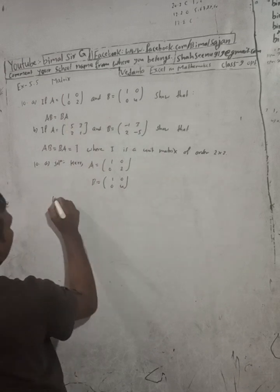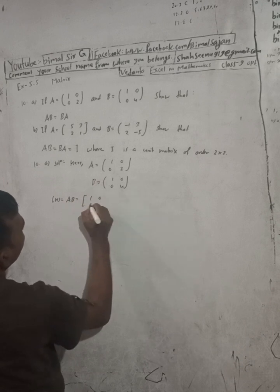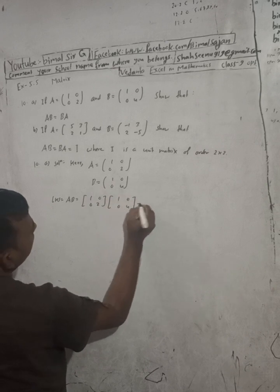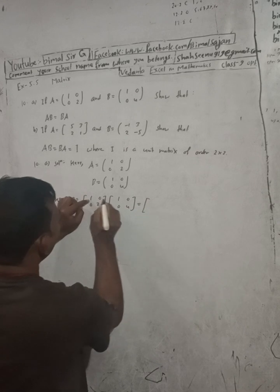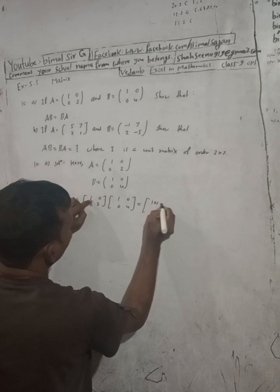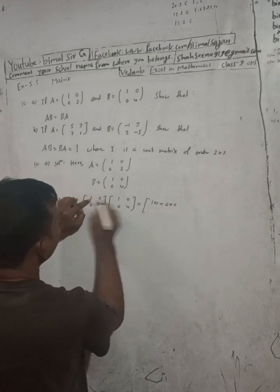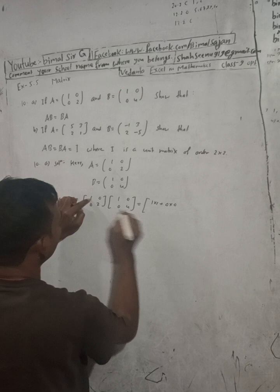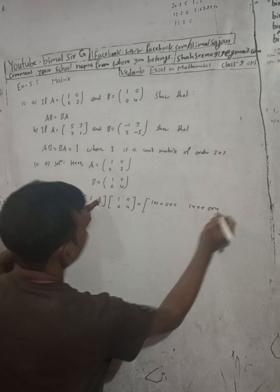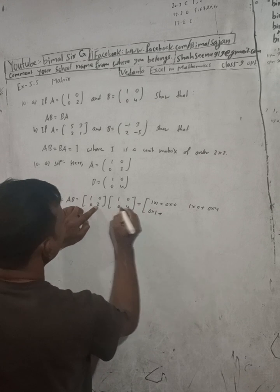LHS is equal to AB. A is [1, 0; 0, 2] and B is [1, 0; 0, 4]. First row multiplied with first column: 1 into 1 plus 0 into 0. First row with second column: 1 into 0 plus 0 into 4. Second row with first column: 0 into 1 plus 2 into 0.